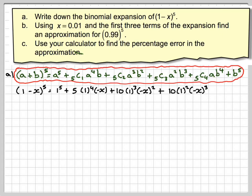Plus 10, 5c3 is 10, times 1 squared times minus x cubed, plus 5 times 1 times minus x to the power of 4 plus minus x to the power of 5.